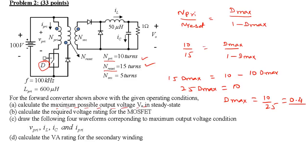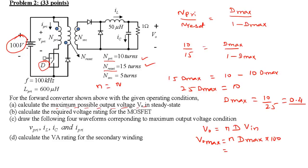From D_max we can calculate the output voltage. The output voltage is always n × D × V_in, so V_O_max = n × D_max × V_in. Here V_in = 100 V, n = N_secondary / N_primary = 5/10 = 0.5, and D_max = 0.4. Therefore V_O_max = 0.5 × 0.4 × 100 = 20 volts. That is the answer to Part A.